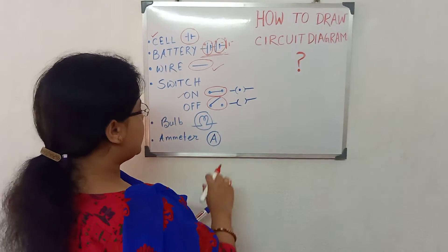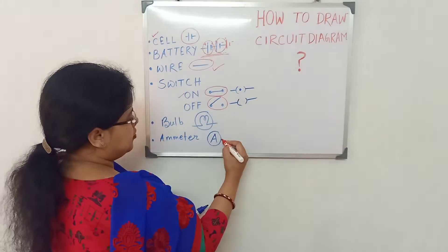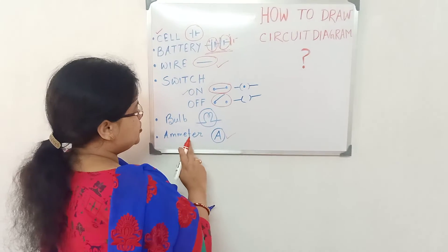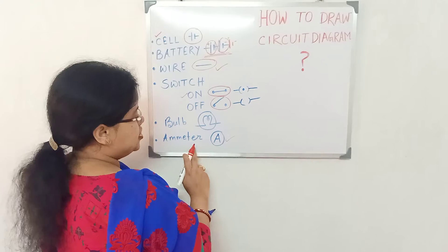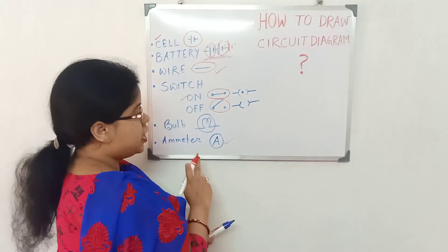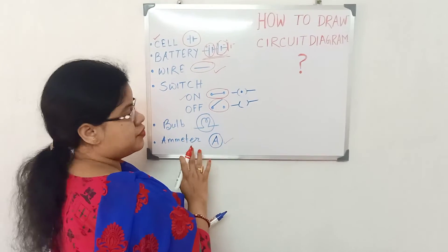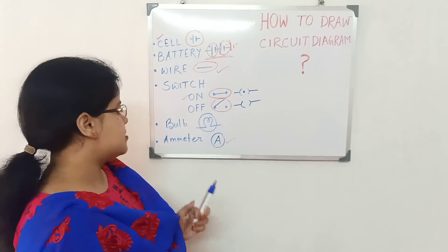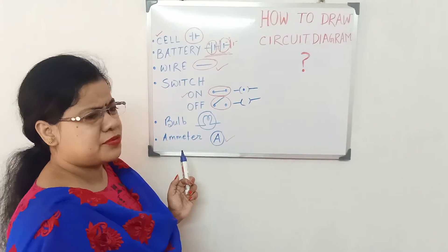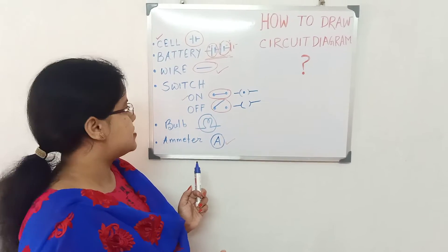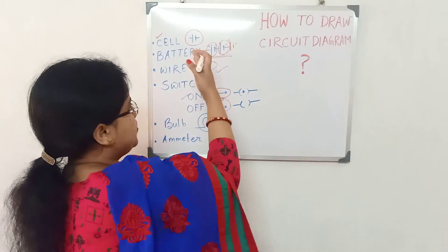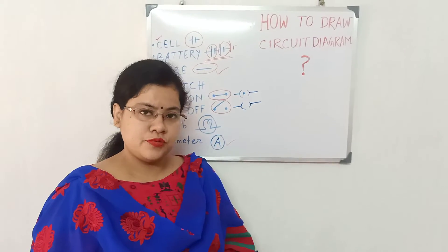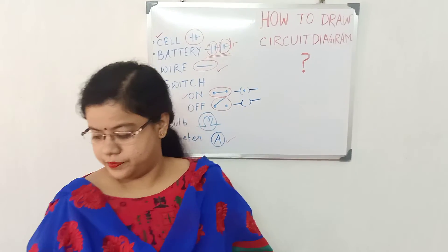This is a bulb. And this is capital A for ammeter, which is used to measure the amount of electricity flowing through a circuit. Just take a look at all these things. Ammeter we can show or not show in the circuit diagram. These are the symbols we will use while drawing a circuit diagram.